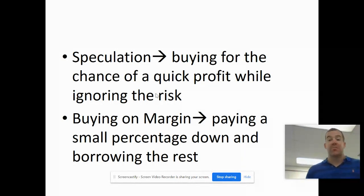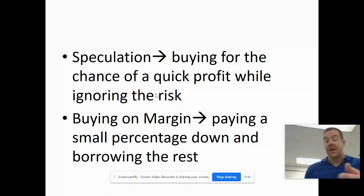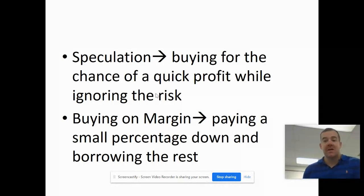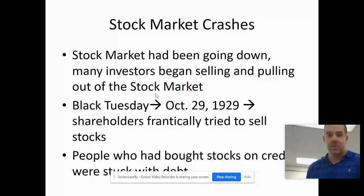Buying on margin is essentially buying on credit — you put a small amount down and borrow the rest. When I built my first house I put an amount down and borrowed the rest from the bank. But what was happening in this era is people were overdoing it — putting five or ten percent down, borrowing the rest, not accounting for the fact that they wouldn't have the money to pay it back, while speculating in the stock market hoping to make a quick profit to pay their loans back.